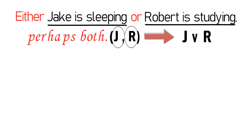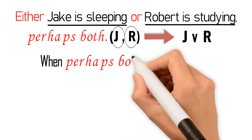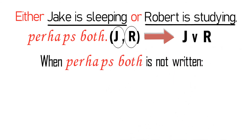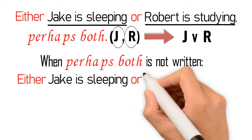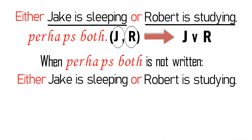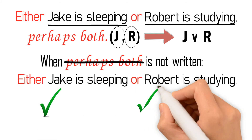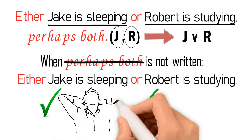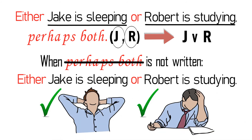It must also be noted that in most cases, the phrase perhaps-both in an inclusive disjunction is not written in the statement. Thus, in determining whether a statement is an inclusive or exclusive disjunction, we just need to analyze the statement per se. The statement may not contain the phrase perhaps-both, but if we analyze it, it is clear that it is an inclusive disjunction because it is possible for both component statements — that Jake is sleeping and Robert is studying — to occur at the same time.